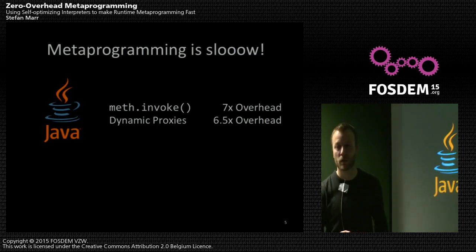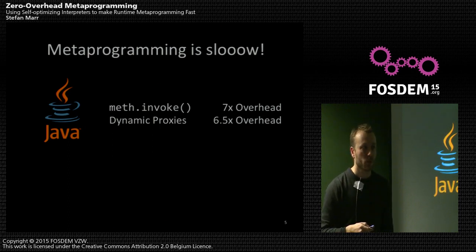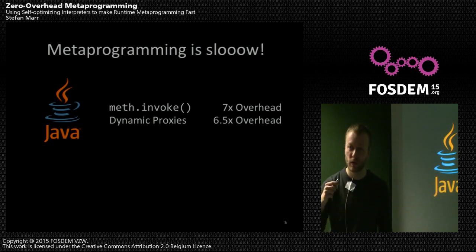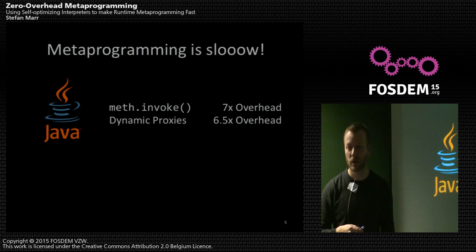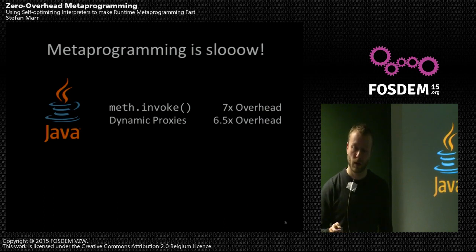Zero overhead — is that achieved by changing the VM? The idea is to make the VM smarter so that all the metaprogramming facilities are fast, working at the VM level.